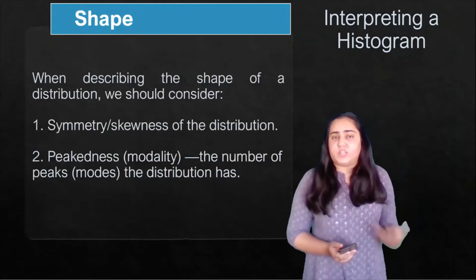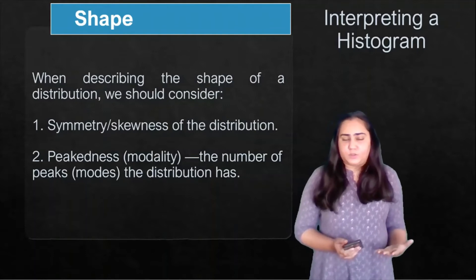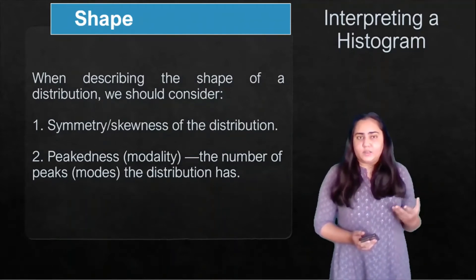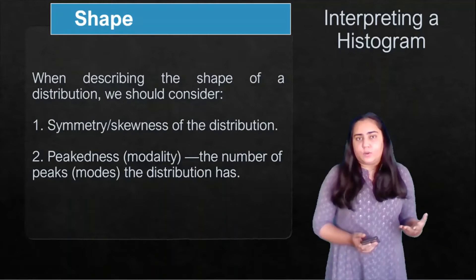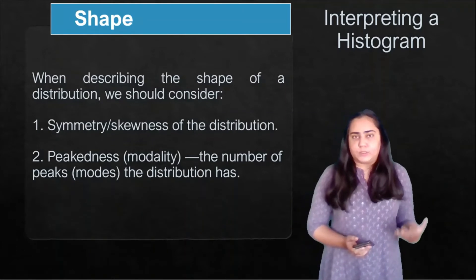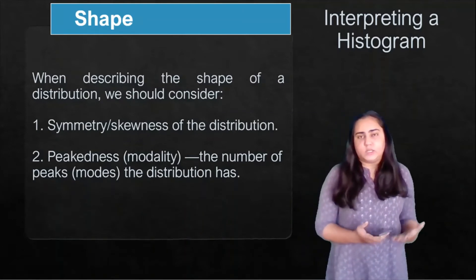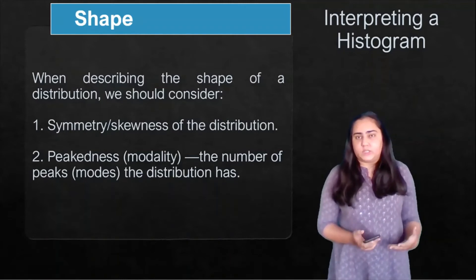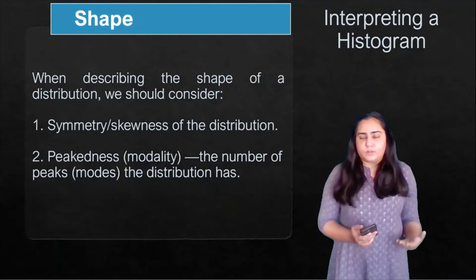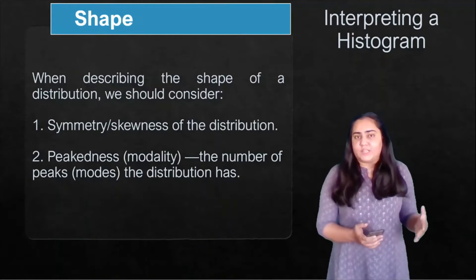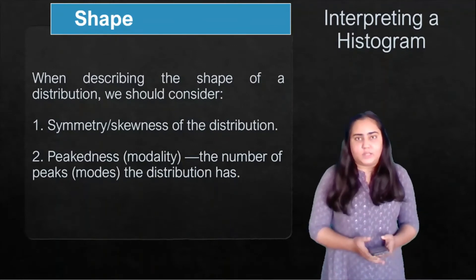When describing the shape of a histogram or the shape of a distribution, we should consider two things. The first is symmetry or skewness of the distribution, and the second is peakness or modality, which is the number of peaks or modes that the distribution has. Mode is a measure of central tendency which I'll talk about in the next video, but I'll be using that term here as we proceed.